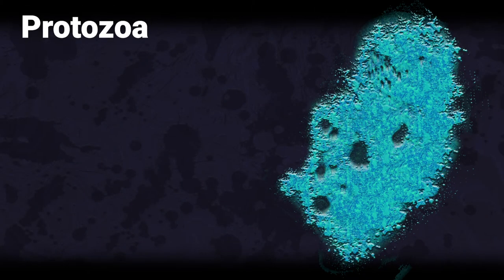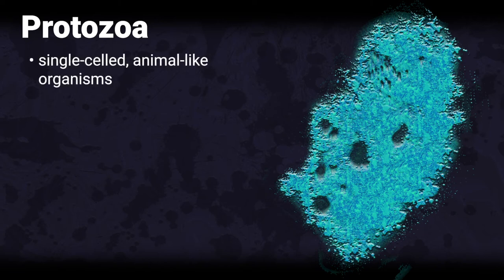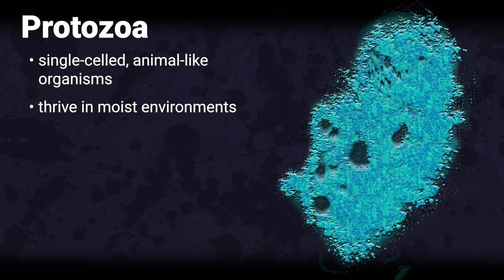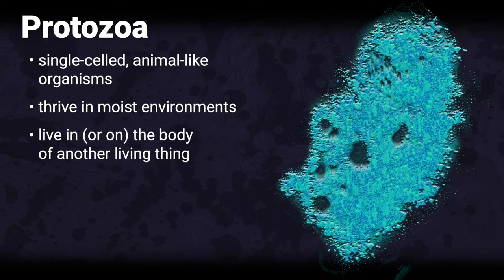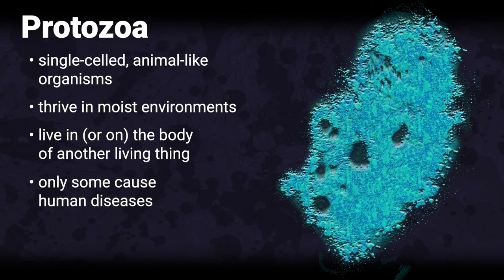Protozoa are simple organisms composed of a microscopic single cell. Protozoa thrive in moist environments and receive nourishment and environmental protection from inhabiting another living thing. Only a small number of protozoa cause human disease, but those that do affect millions of people worldwide, causing considerable suffering, death, and economic hardship. Examples of serious protozoan diseases include malaria, African sleeping sickness, amoebic dysentery, and giardia.